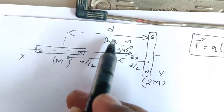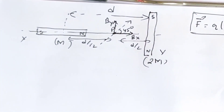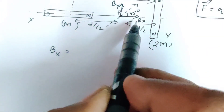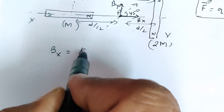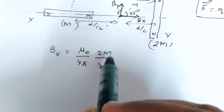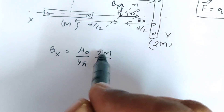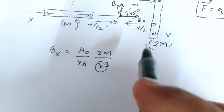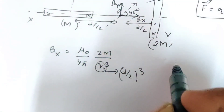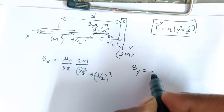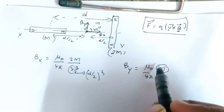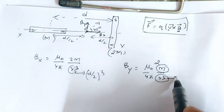Now we know the direction of Bx and By. Let us find their magnitudes. Bx is along the axial line, so the general expression is (μ₀/4π)(2m/r³). Here the magnetic dipole moment is M, so this is 2M, and r is the distance D/2. So the denominator is (D/2)³. For By along the equatorial line, the general expression is (μ₀/4π)(m/r³). Here m is 2M and r is again D/2. Comparing these two, both have the same magnitude.